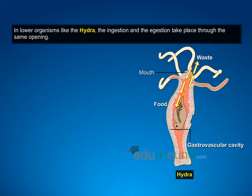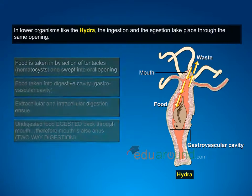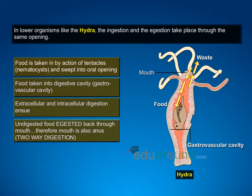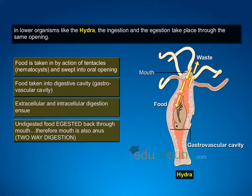In lower organisms like the hydra, ingestion and egestion take place through the same opening. Food is taken in by the action of tentacles, i.e. nematocysts, and swept into the oral opening. Food is taken into the digestive cavity, i.e. the gastro-vascular cavity. Extracellular and intracellular digestion ensue. Undigested food is expelled back through the mouth. Therefore, the mouth is also the anus — a two-way digestion process.